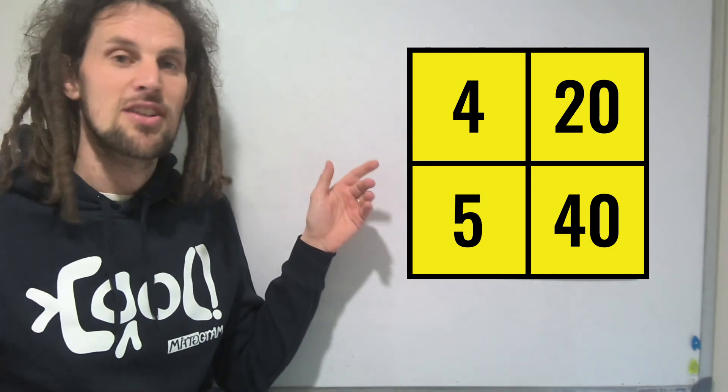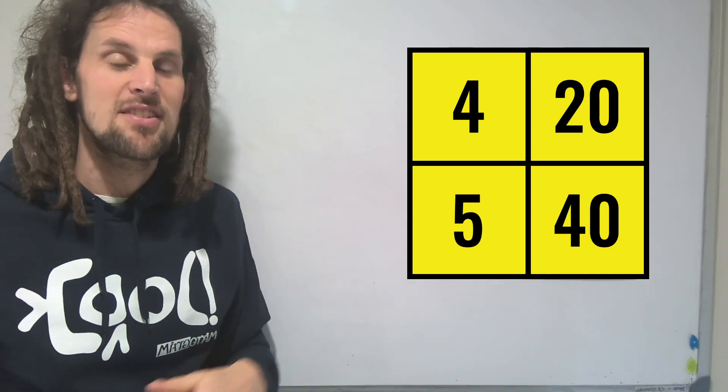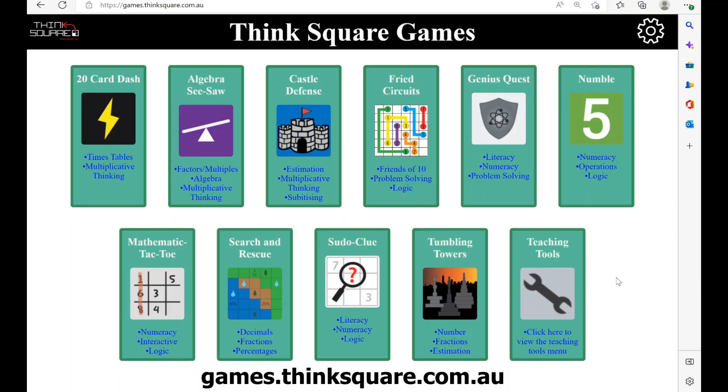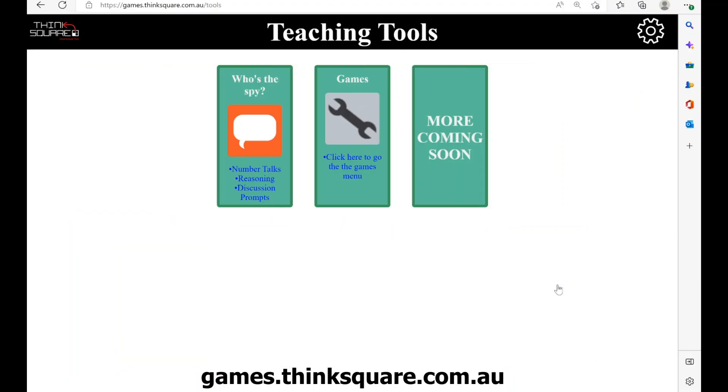Now there's 150 of these across so many different topics you can access online. Head to games.thinksquare.com.au and click teaching tools. When you're there, select who's the spy.